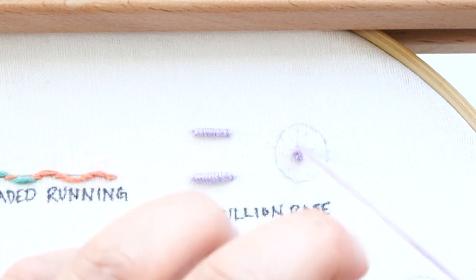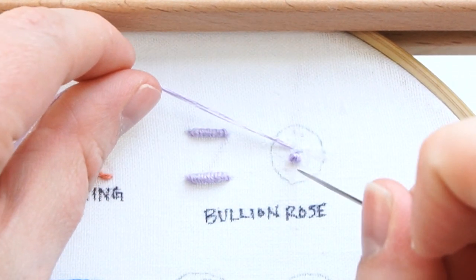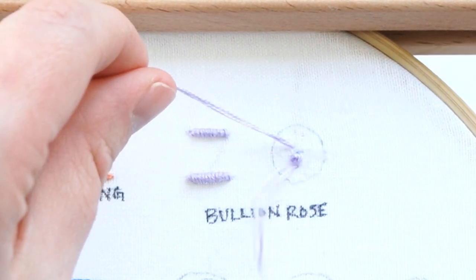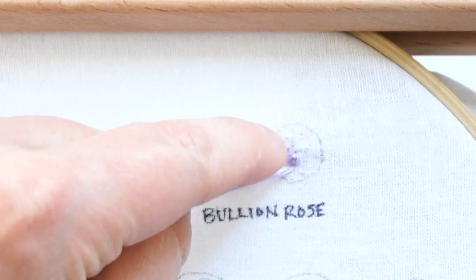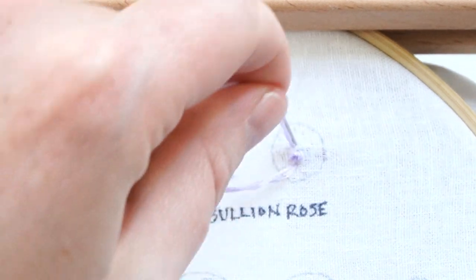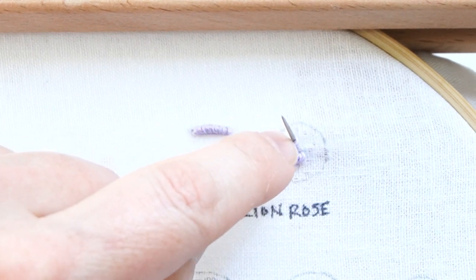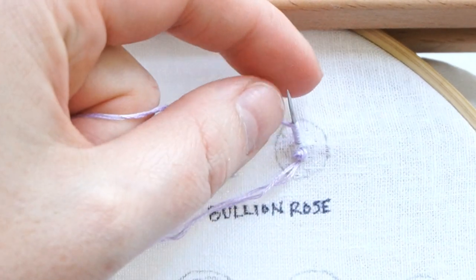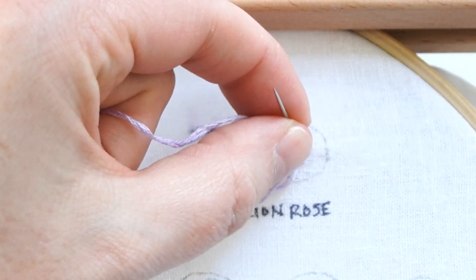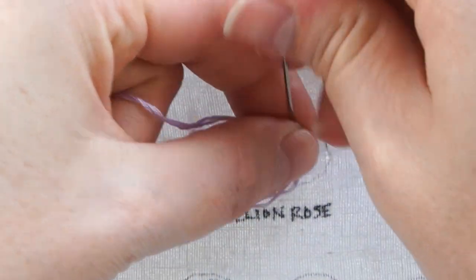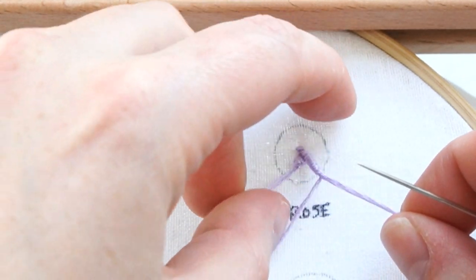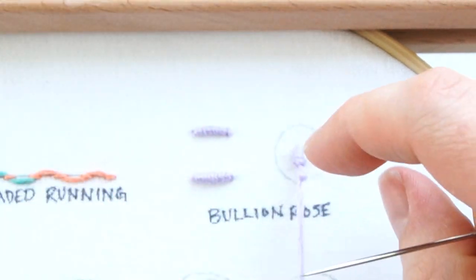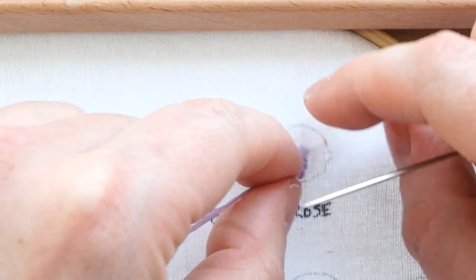Once you have that first French knot done, bring your needle up near the top of it, then back down near the bottom. Leave a loop of thread on top and bring your needle back up in the first part. Wrap the thread around—for these first knots you don't need a lot of wrapping since we're going a short distance. Hold the wrappings with your pointer finger and thumb, pull the needle out, and pull in the direction your knot will be laying.